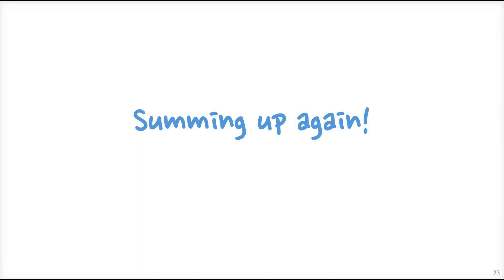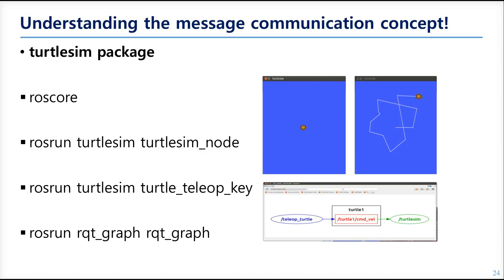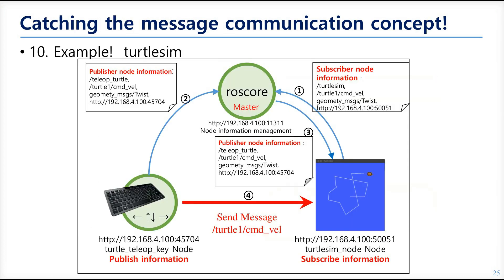Now let's review the example we ran in the previous chapter. We first ran the ROS core, then the turtlesim node — the turtle simulation node — which is the subscriber node. We then ran the turtle_teleop_key node, which is turtle teleoperation using the keyboard, and this is the publisher node. The teleop keyboard node converts key input into a command velocity message, and the turtlesim node uses that data to move the turtle on screen.